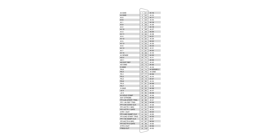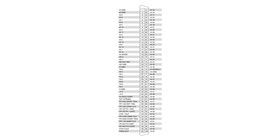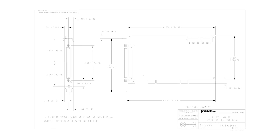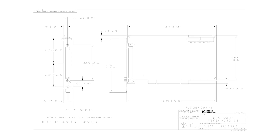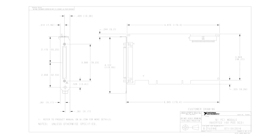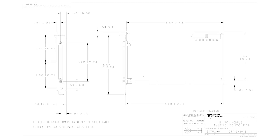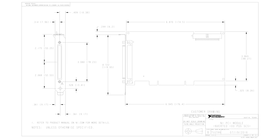The PCI-6071E offers powerful analog input capabilities with 64 single-ended or 32 differential channels and 12-bit resolution through a successive approximation ADC. This board supports analog I/O, digital I/O, and two 24-bit counter/timers, ensuring comprehensive data acquisition for diverse applications.